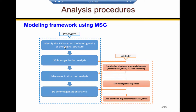Once we have SG, we can take SG homogenization analysis to get the first result, which is the constitutive relation over structural elements. For beam, it is the beam stiffness matrix. For plate and shell, it is the ABD matrix. And for 3D solid, it is the general 6 by 6 material properties matrix.